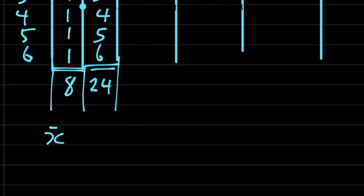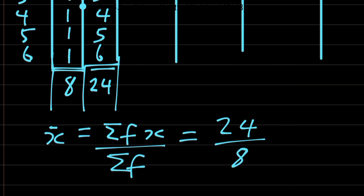The mean is going to be equal to summation of f of x over summation of f which is equal to 24 divided by 8. 24 divided by 8 is 3. That is the mean.